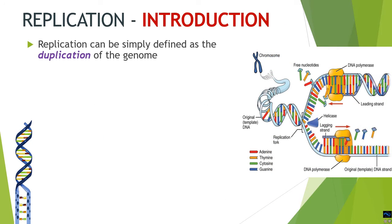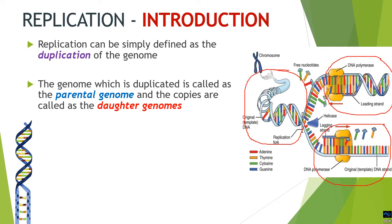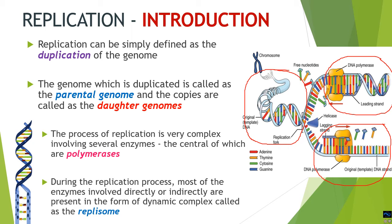Replication is simply the duplication of the genome. The genome which gets duplicated is called the parental genome, and the copies made thereof are called daughter genomes. As you can see in the diagram, the parental genome is a single copy and out of it two copies per strand are produced as daughter genomes. The replication process is very complex and involves several enzymes. The central role is played by specialized enzymes called polymerases. The whole set of enzymes involved directly or indirectly are called the replisome — polymerases plus all other enzymes which help in replication.